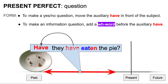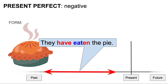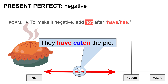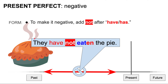To make an information question, add a WH word before the auxiliary have. For example, why have they eaten the pie? To make a negative statement, add not after have or has. For example, positive: they have eaten the pie. Negative: they have not eaten the pie.